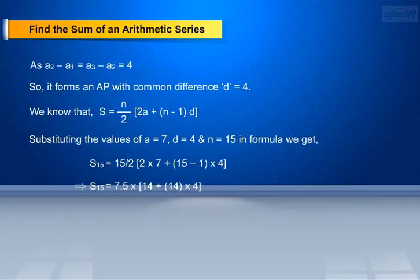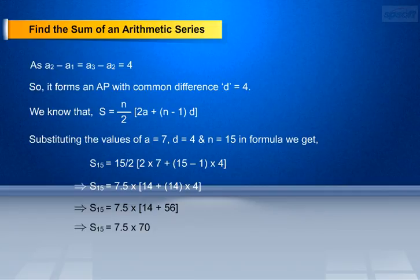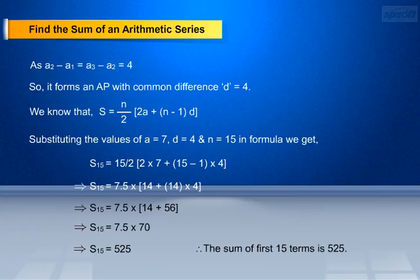This implies S15 equals 7.5 into 14 plus 14 into 4, which implies S15 equals 7.5 into 14 plus 56, which implies S15 equals 7.5 into 70, which implies S15 equals 525. Therefore, the sum of the first 15 terms is 525.